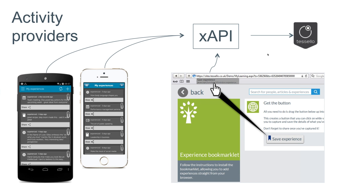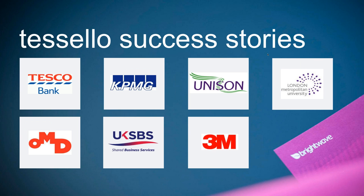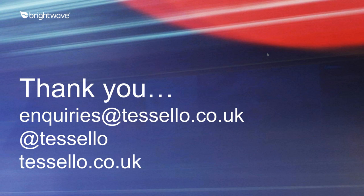You could do these things before xAPI, but it was very difficult — there wasn't a standard way of doing it and everyone was doing it slightly differently. With xAPI, it allows us to create compliant activity providers such as the mobile app and the bookmarklet. In the future, other providers could provide activities to Ticello without using a custom API — they just use the xAPI.